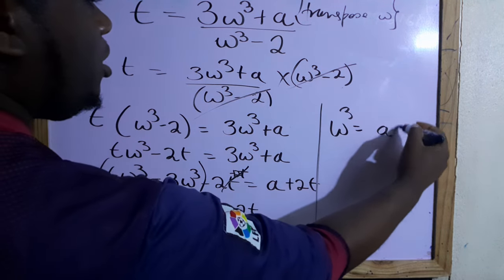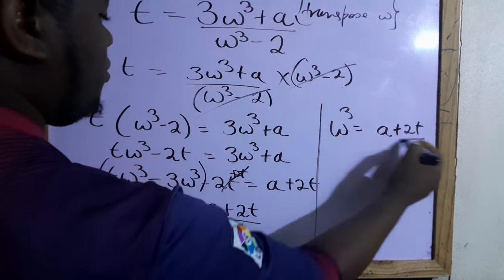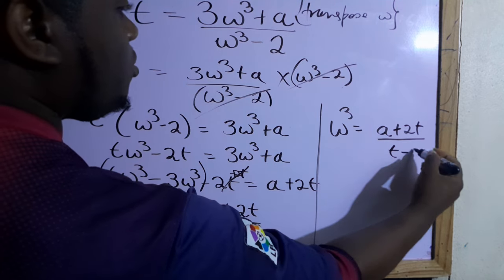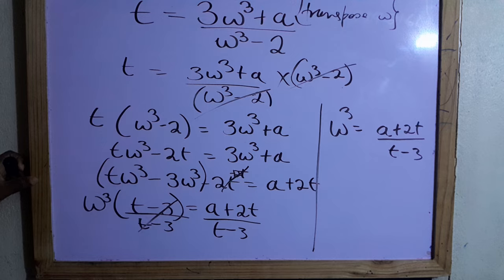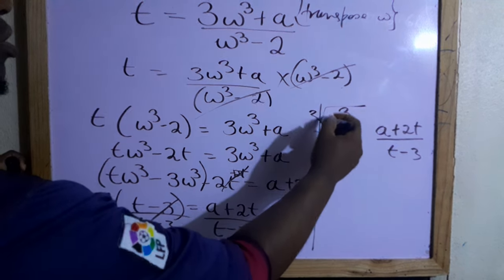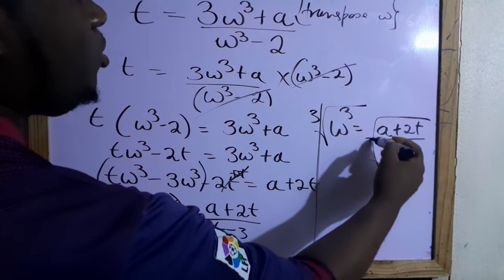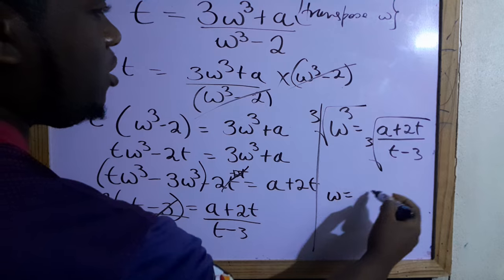All of this, a + 2ℓ, all over ℓ - 3. So we need to take the inverse of cube, which is the cube root. We'll just take the cube root, so this will be ω. This is the final answer: ω equals the cube root of (a + 2ℓ) over (ℓ - 3).